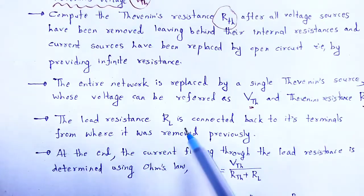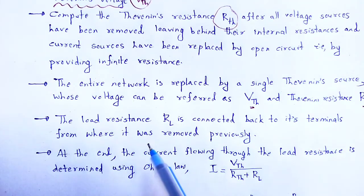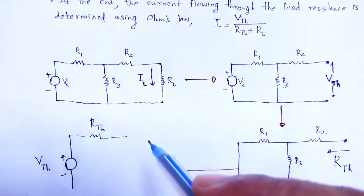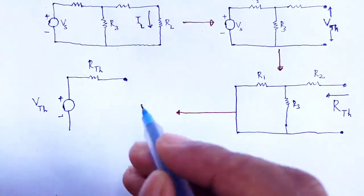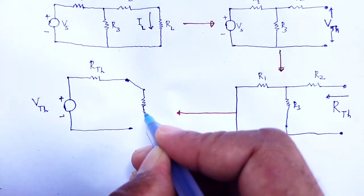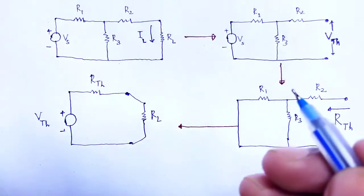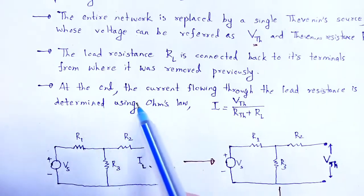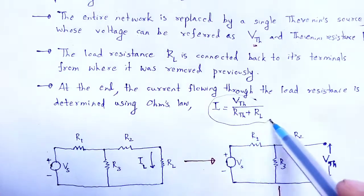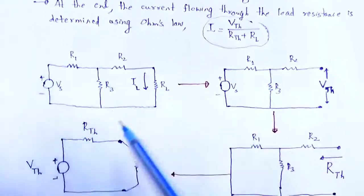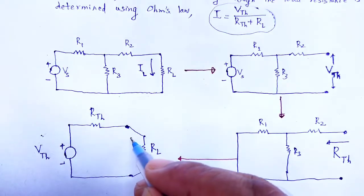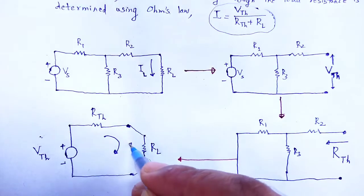Next, the load resistance RL is connected back to its terminals from where it was removed previously. Now we connect that load resistance back. At the end, the current flowing through the load resistance is determined by using Ohm's law — current equals voltage divided by resistance. So that voltage is the Thevenin voltage and that resistance is the Thevenin resistance. In this way we calculate the load current IL.